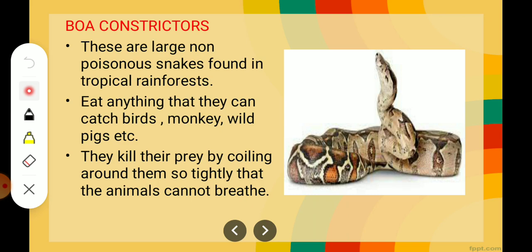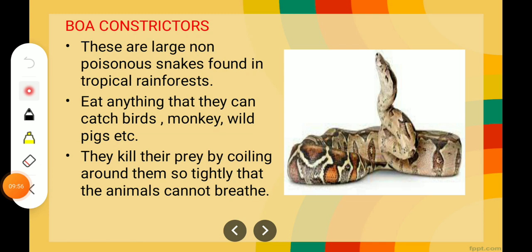The last one is boa constrictors. These are non-poisonous snakes found in tropical rainforests. They eat anything — birds, monkeys, and even wild pigs — so they are very huge and big. They kill their prey by coiling around it so tightly that the animal feels suffocated and slowly dies.